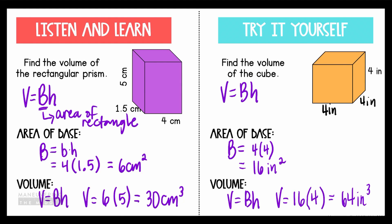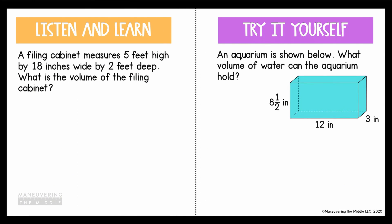Let's look at two more examples. A filing cabinet measures 5 feet high by 18 inches wide by 2 feet deep. What is the volume of the filing cabinet? This one doesn't show a picture, and I personally love to draw a picture even if it's not a very good drawing, because it helps me understand and picture in my mind what's actually happening in the story problem. So I'm going to label my filing cabinet as 5 feet high, 18 inches wide, and 2 feet deep. Hopefully you caught that the units of measurement aren't all the same. We see 18 inches, but we can't just write 18 inches — we're going to have to convert that to feet. I know that 1 foot is 12 inches, so that's 1 foot, and then that would leave me with 6 inches left over. So I can write that as 1½ feet.